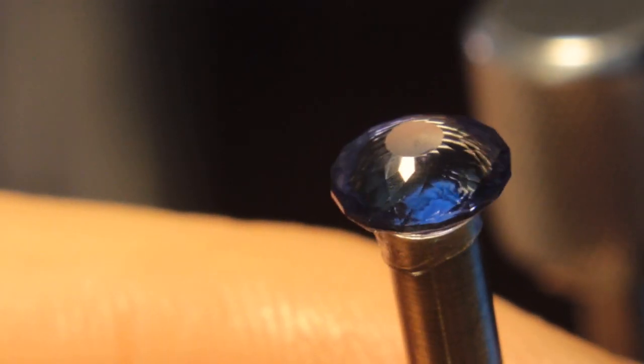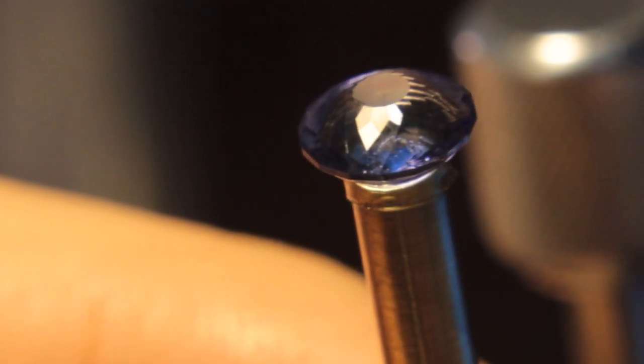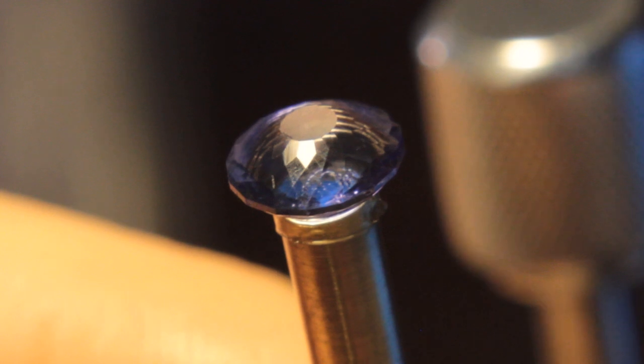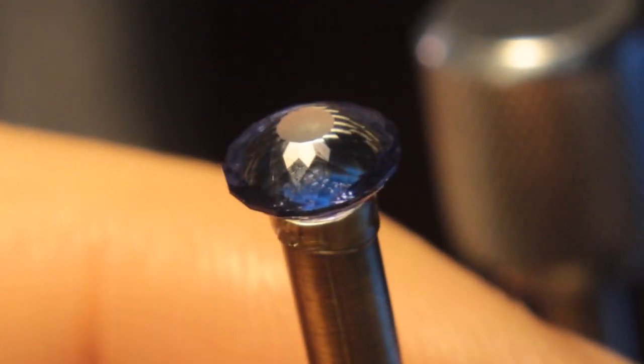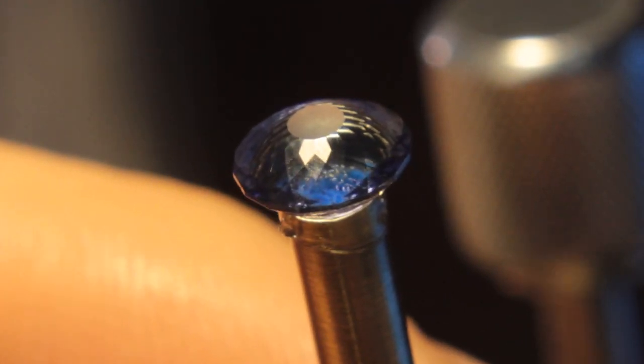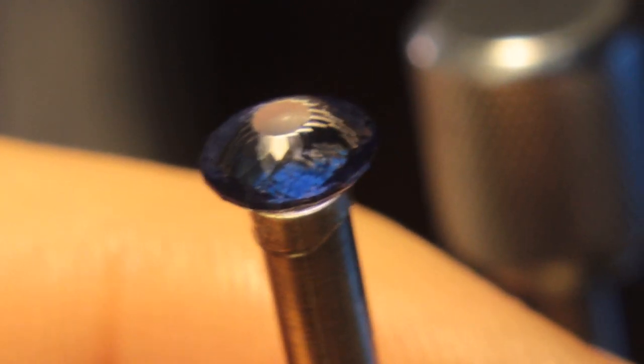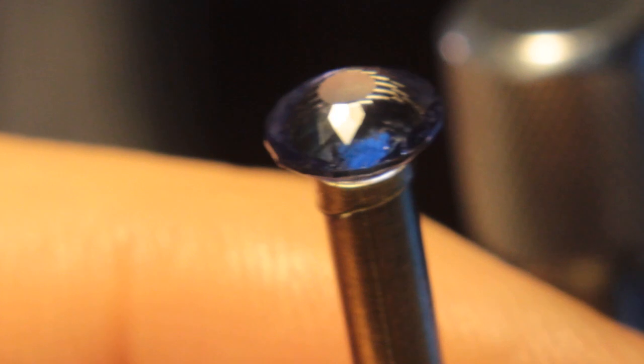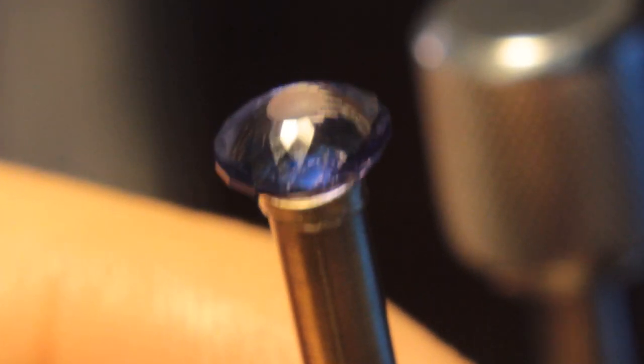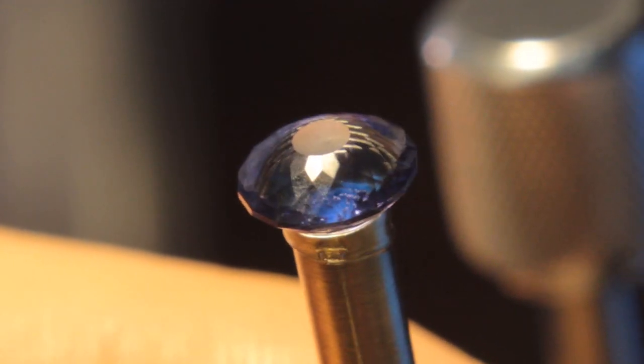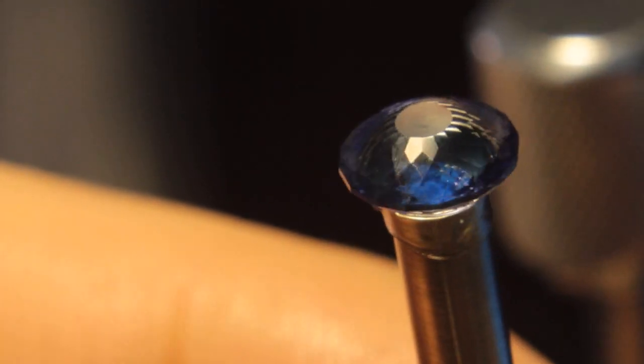I finished pre-polishing the tanzanite with 13,000 grit diamond on a bat lap. And for the pavilion or the bottom half of the stone, I polished it with the Gear Loose's greenway lap with aluminum oxide spray. But I know a lot of people don't have the greenway. So what I'm going to do on the crown, the upper half here, is I'm going to polish this with a 60,000 grit diamond on a bat lap. Because I'm sure a lot more people have that than the greenway. And let's see how the diamond grit does in polishing this stone up.